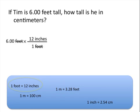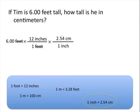But the question is asking us how tall Tim is in centimeters, so we'll need to use another conversion factor. I can set up my conversion factor with inches on the bottom because I know that I want inches to cancel out. Then looking at the conversion factors I have available, I can see that 1 inch is equal to 2.54 centimeters. Because inches is already written on the bottom, I know that 2.54 centimeters must go on the top. This allows me to cancel out the units of inches.